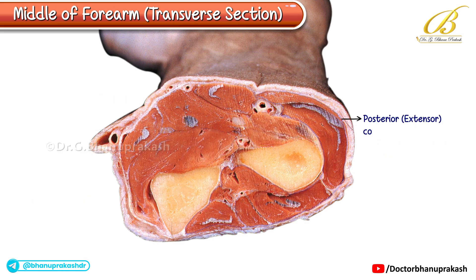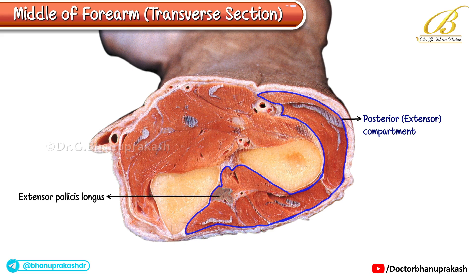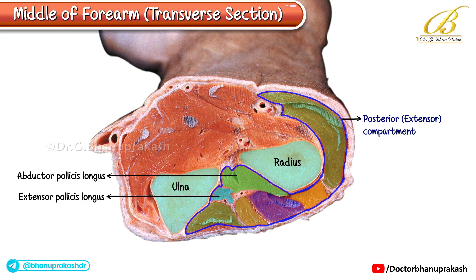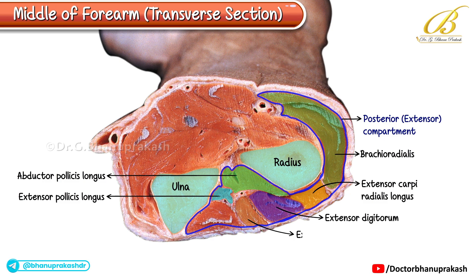Now let's move on to the posterior or extensor compartment. Among the deep muscles, two are seen closely related to the bones: the extensor pollicis longus, which lies adjacent to the ulna, and the abductor pollicis longus, which runs along the radius. Next, let's observe the superficial extensor group arranged from lateral to medial: the brachioradialis forming the lateral boundary, the extensor carpi radialis longus seen along the posterior surface of the radius, the extensor digitorum, the extensor digiti minimi, and finally the extensor carpi ulnaris, positioned next to the ulna.